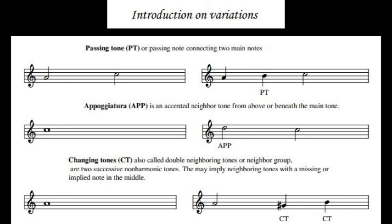Passing tones or passing notes are to connect two main notes. The appogiatura is an accented neighbor tone from above or beneath the main tone. This also can be used specifically for the accenting effect that we have explained in how to create a scherzo. Then we have changing tones, changing tones also called double neighboring tones or neighbor groups. The changing tones are two successive non-harmonic tones. They may imply neighboring tones with a missing or implied note in the middle.